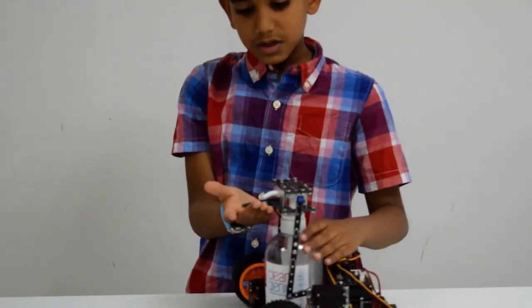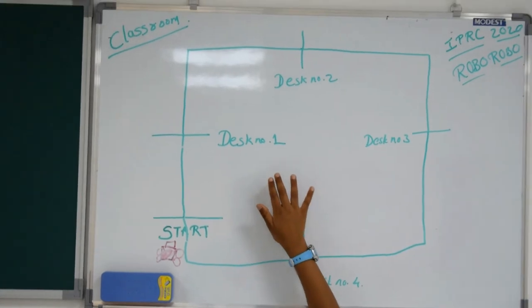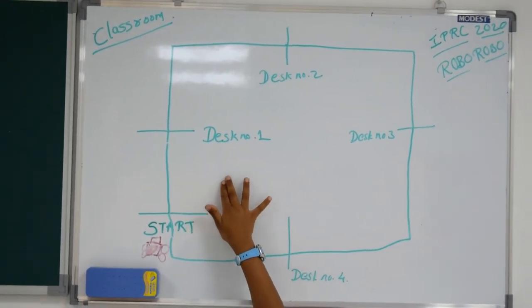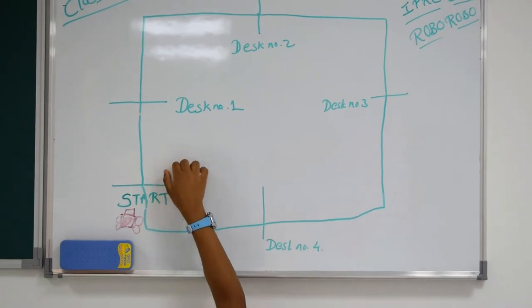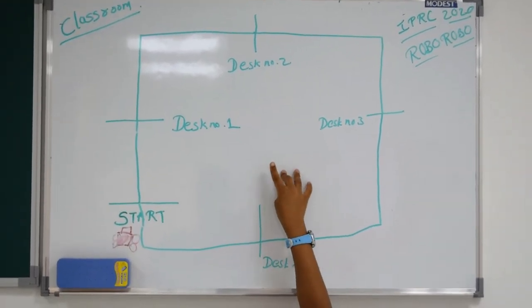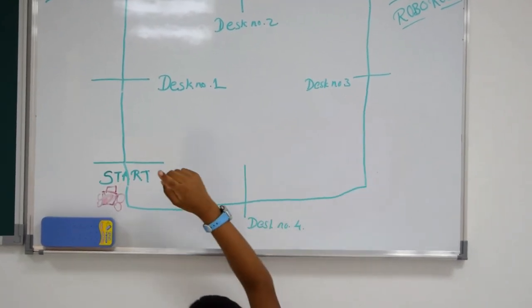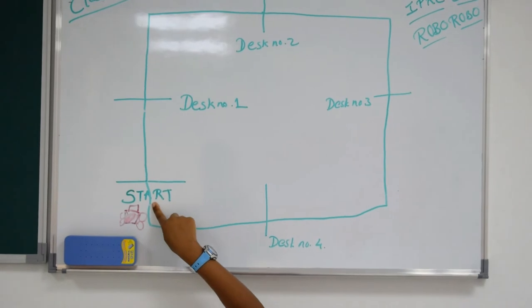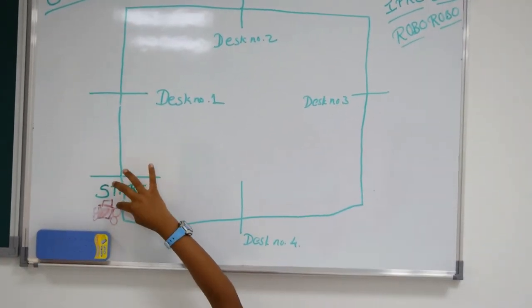If you put your hand under the IR sensor, sanitizer will come out. So the person who is sitting here will put his hand under the IR sensor and take sanitizer. And then it will go to the next desk which will do the same thing, and it keeps on repeating until it gets back to the start and then it stops.